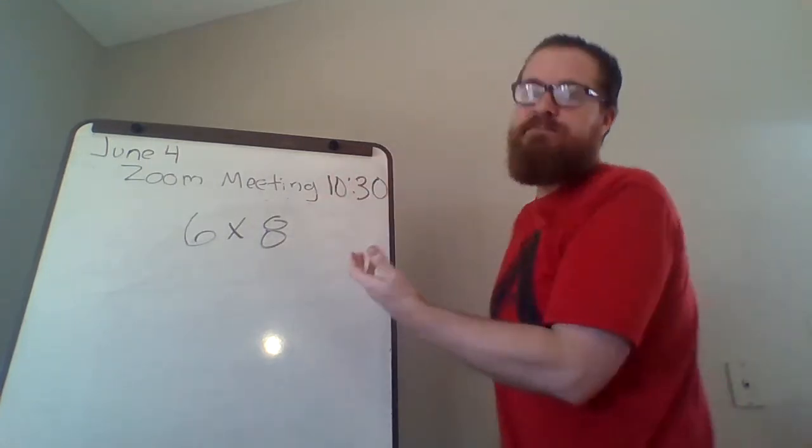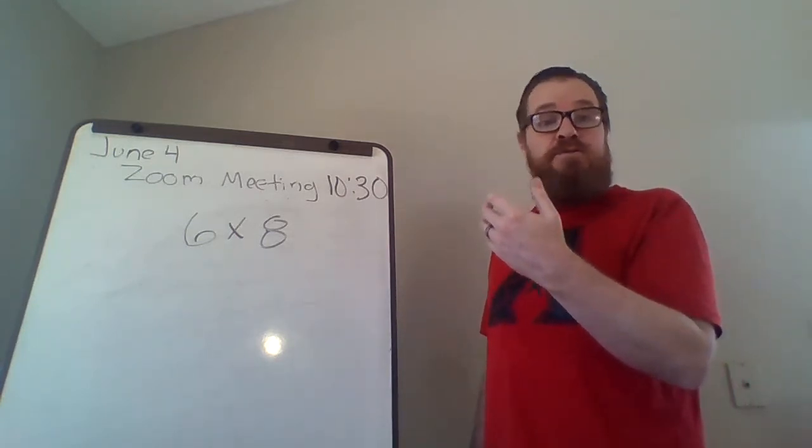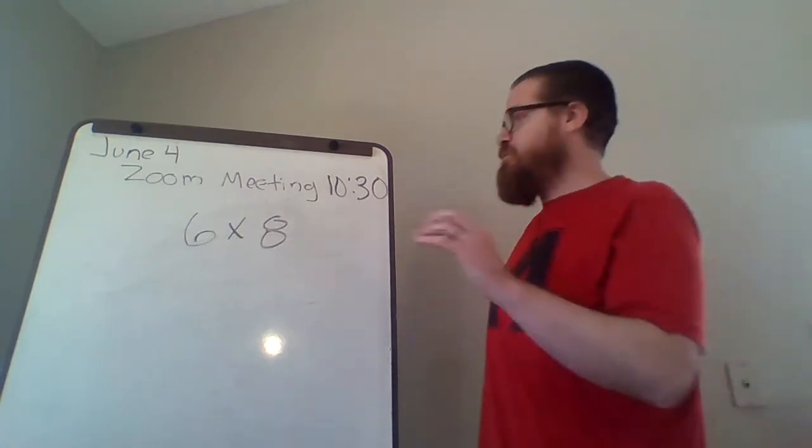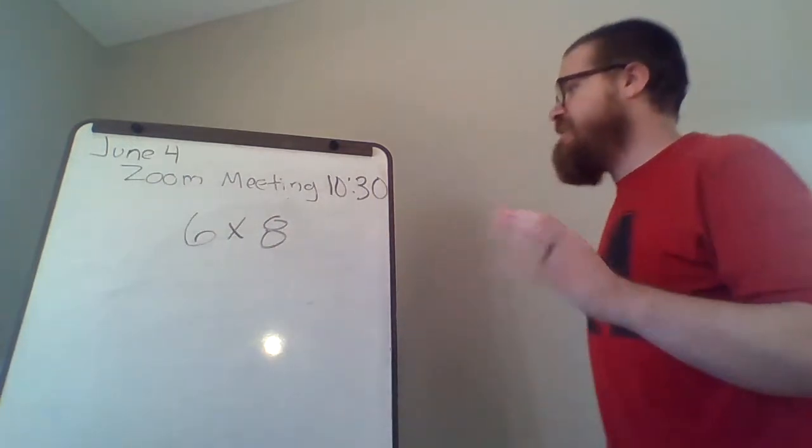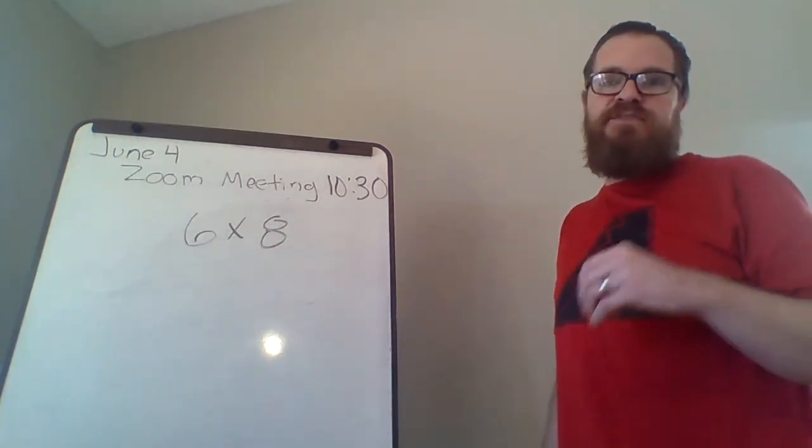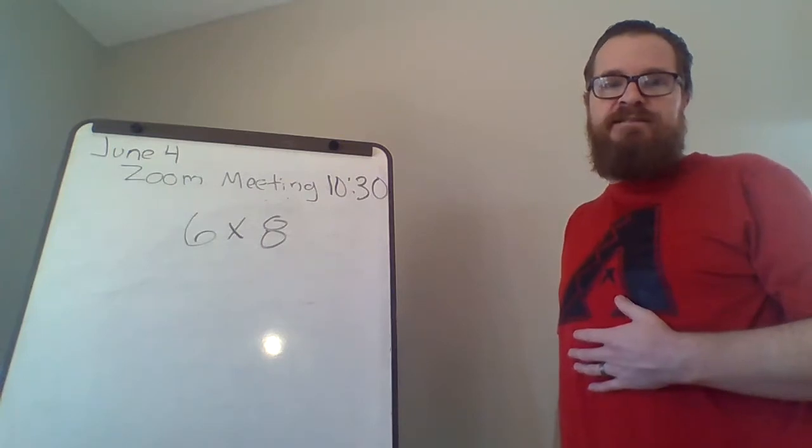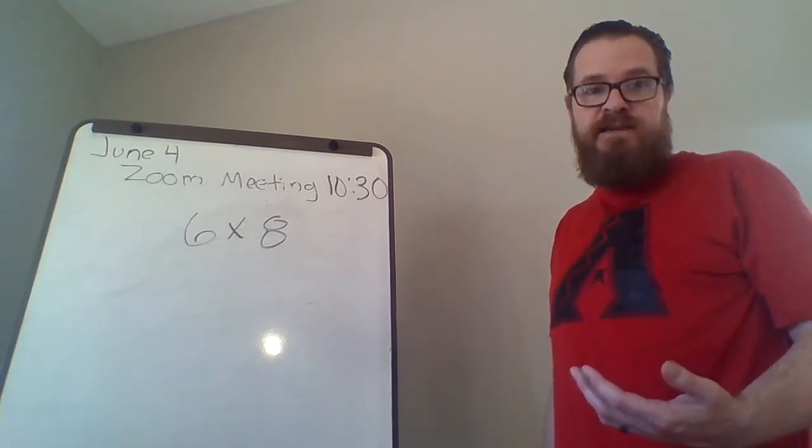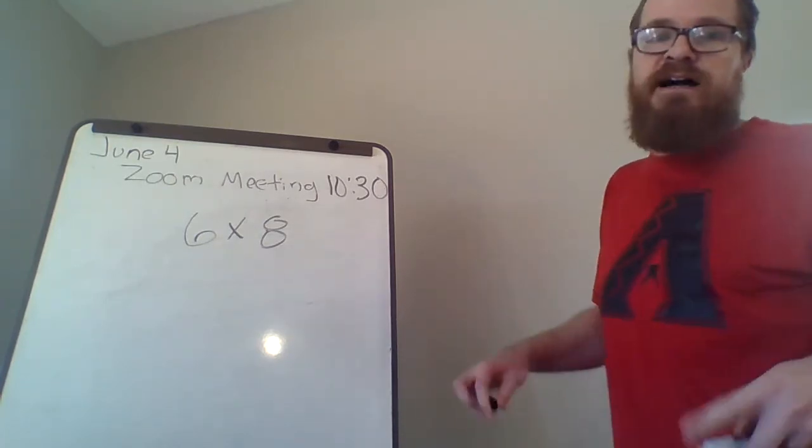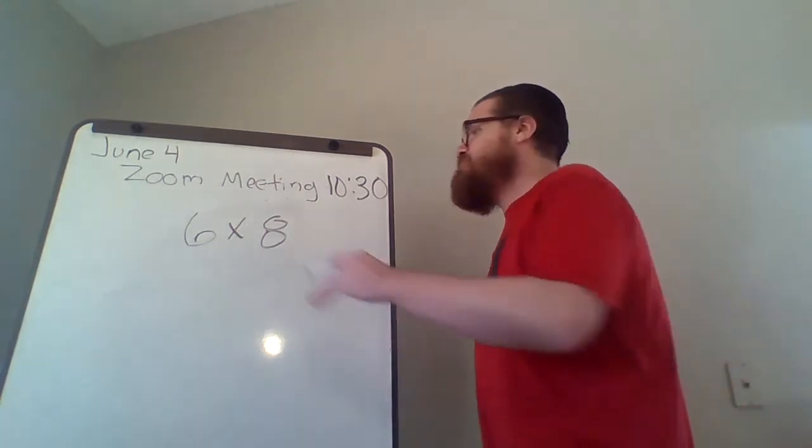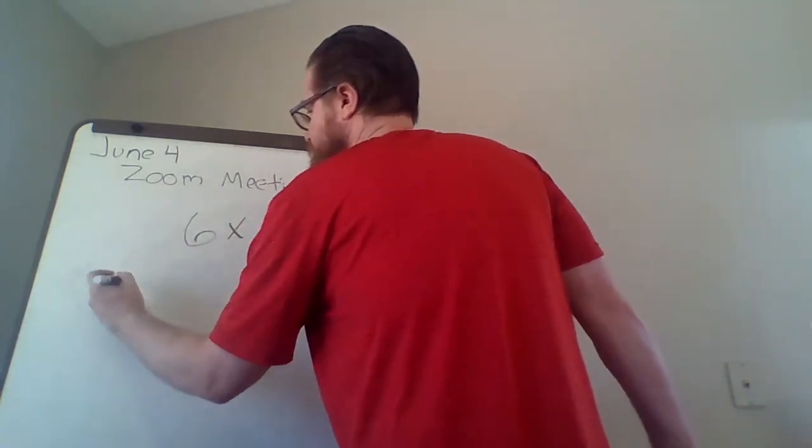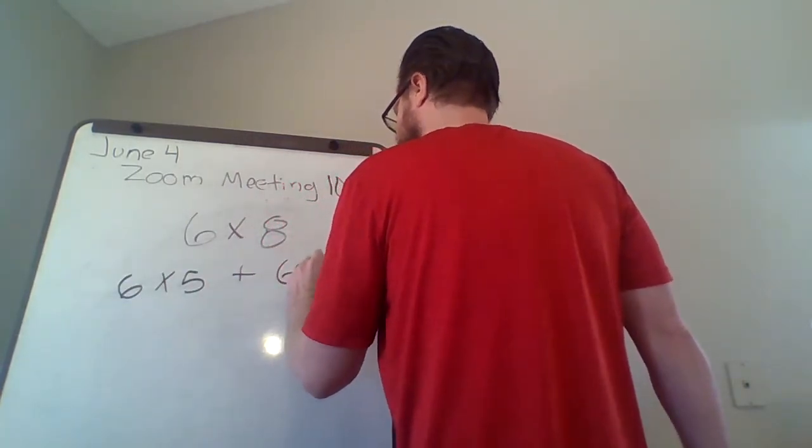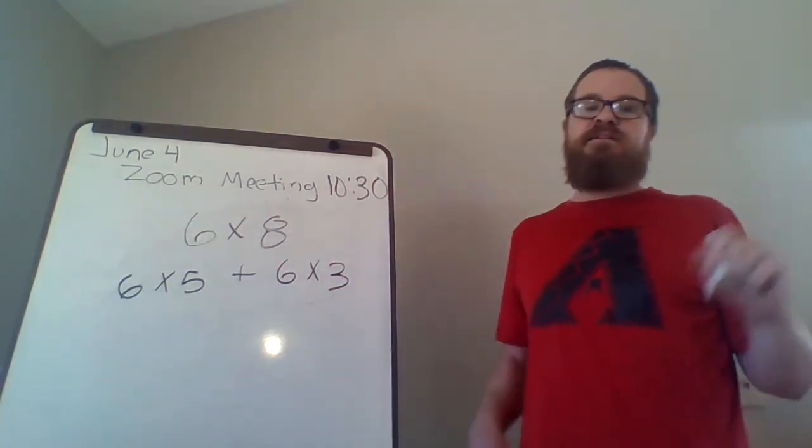Let's take a look at this idea. Let's say that you're trying to do 6 times 8. Maybe you know that fact, and I hope you do, or maybe you don't. But what I can do is I can break it apart. So I look at my two numbers, 6 and 8. 8's a little bit bigger, right? And I think, what are two numbers that I can add together and make 8 that are easy for me to multiply? How about 5 and 3. 5 plus 3 is 8, right? So instead of multiplying 6 times 8, if I don't know what that is, I can multiply 6 times 5 plus 6 times 3.